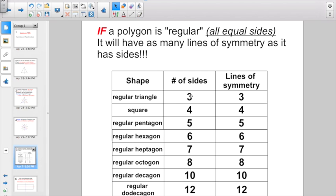Like a regular triangle with three sides would have three lines of symmetry. Or a square with four sides, four lines of symmetry. Hexagon with six sides, six lines of symmetry. A decagon, ten sides, ten lines of symmetry, if they are all equal sides.